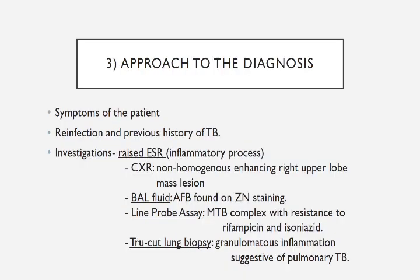Approach to the diagnosis: The patient presents with dry cough, fever, reduced appetite, and weight loss. The previous history of TB and reinfection emphasizes the development of drug-resistant TB. Investigations: Raised ESR depicts the inflammatory process. Chest X-ray shows a non-homogeneous enhancing right upper lobe lesion. Bronchoalveolar lavage AFB — acid-fast bacilli found on ZN staining. Line probe assay confirms Mycobacterium tuberculosis complex with resistance to rifampicin and isoniazid. Trucut lung biopsy confirms granulomatous inflammation suggestive of tuberculosis.